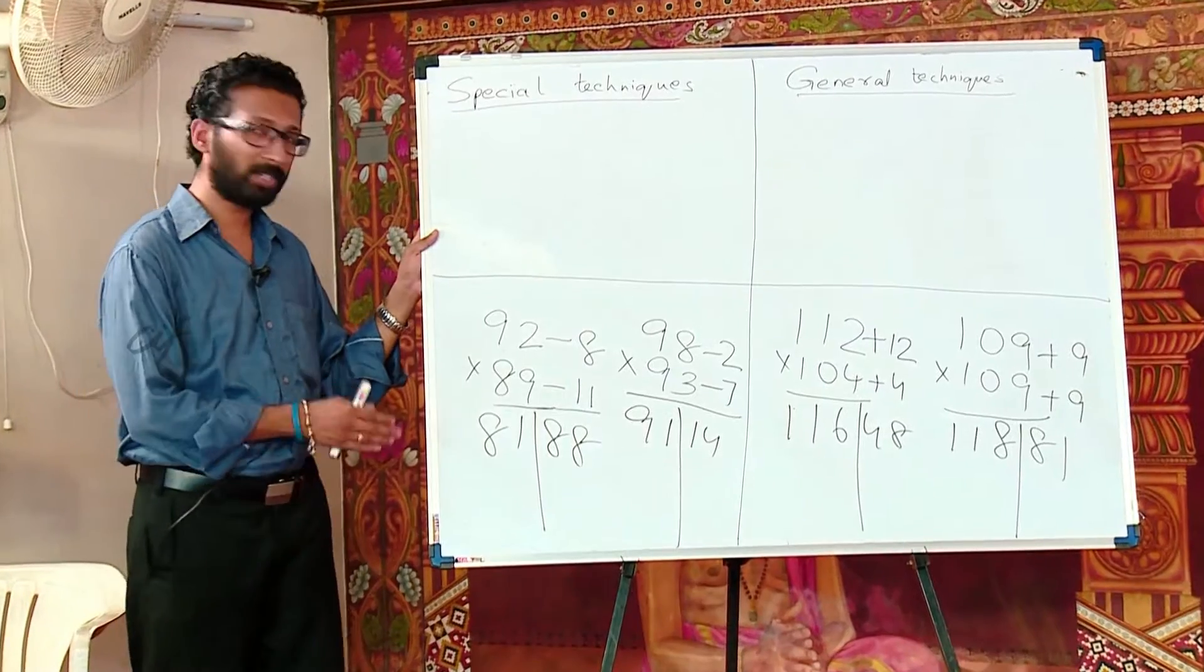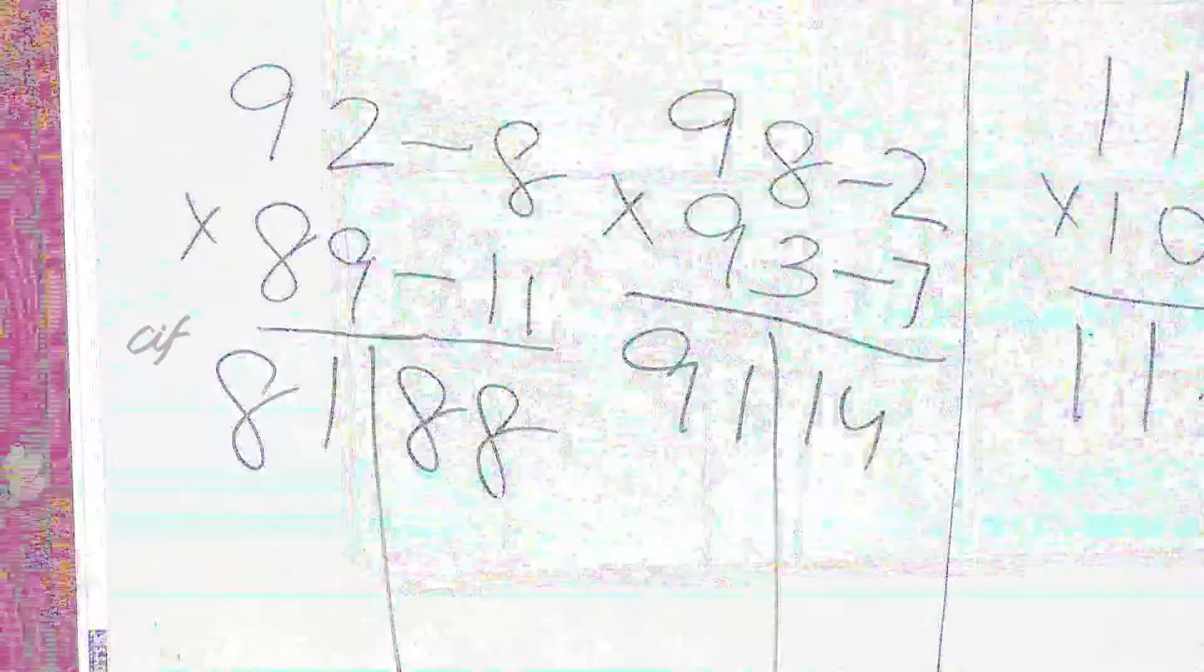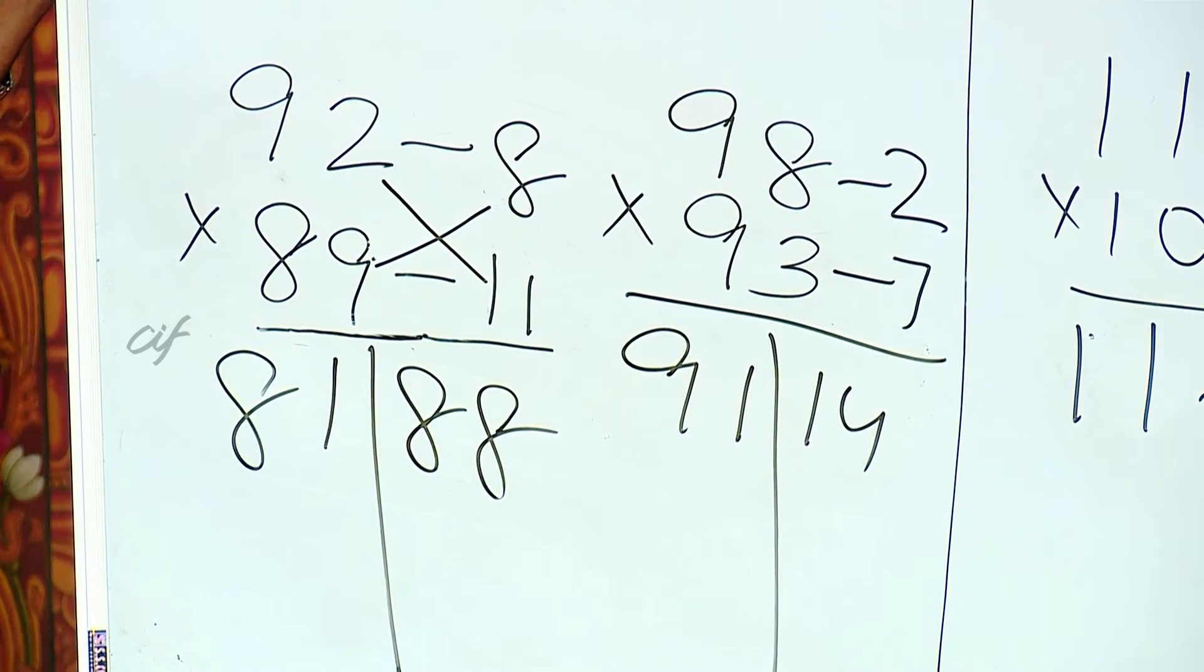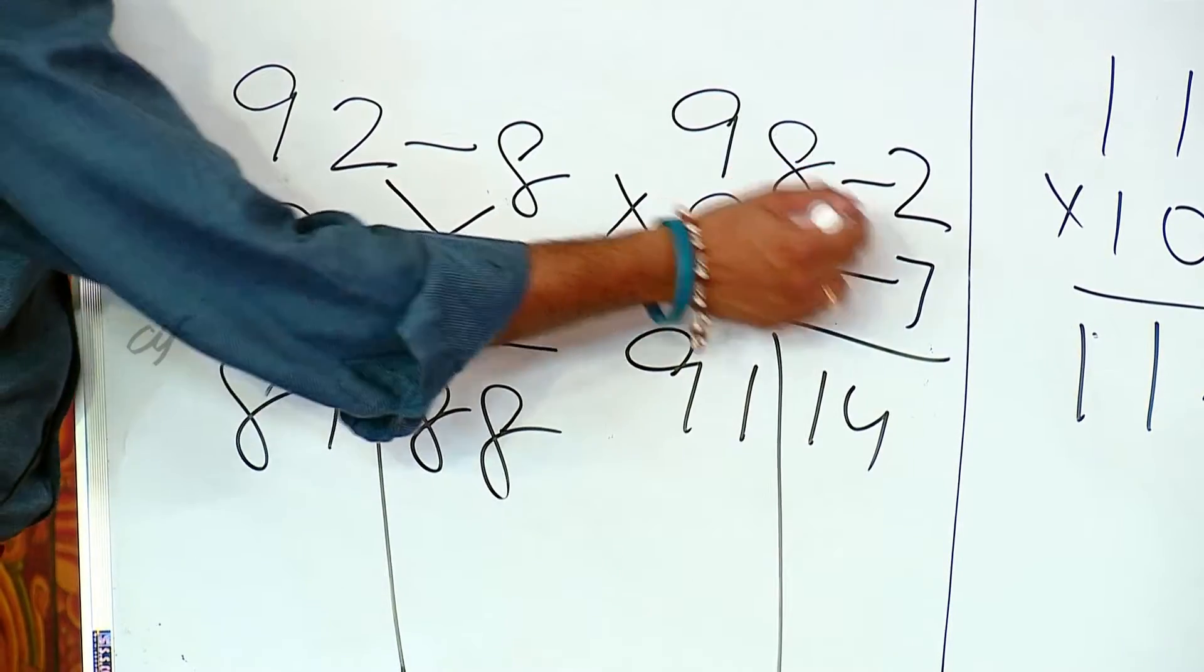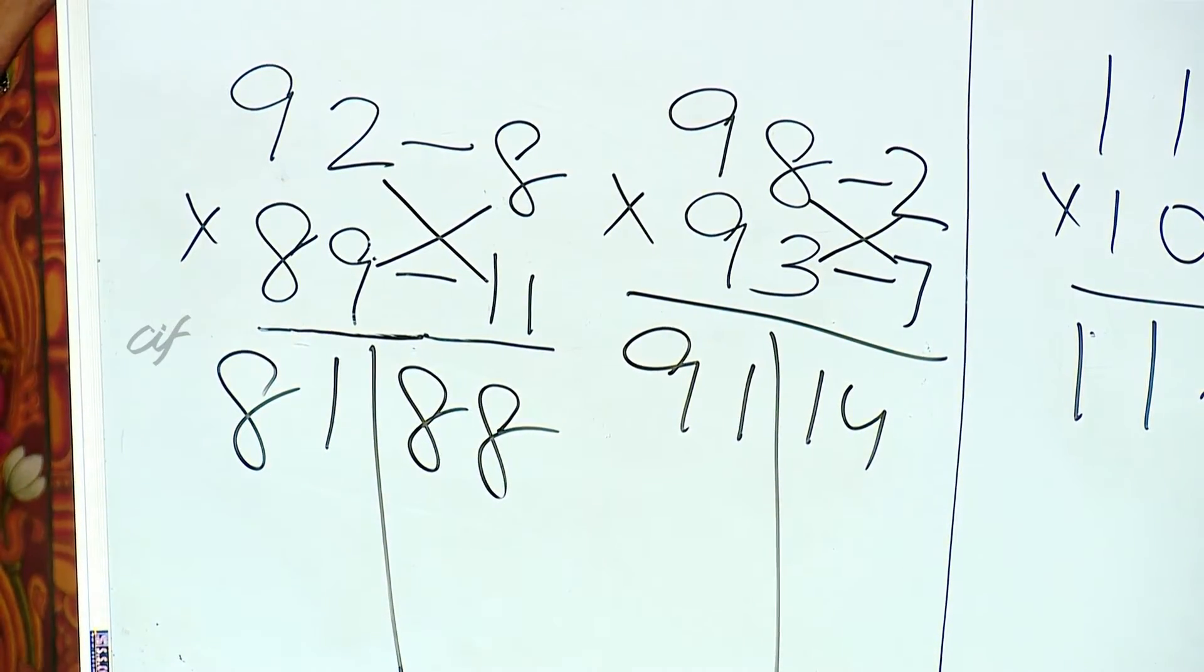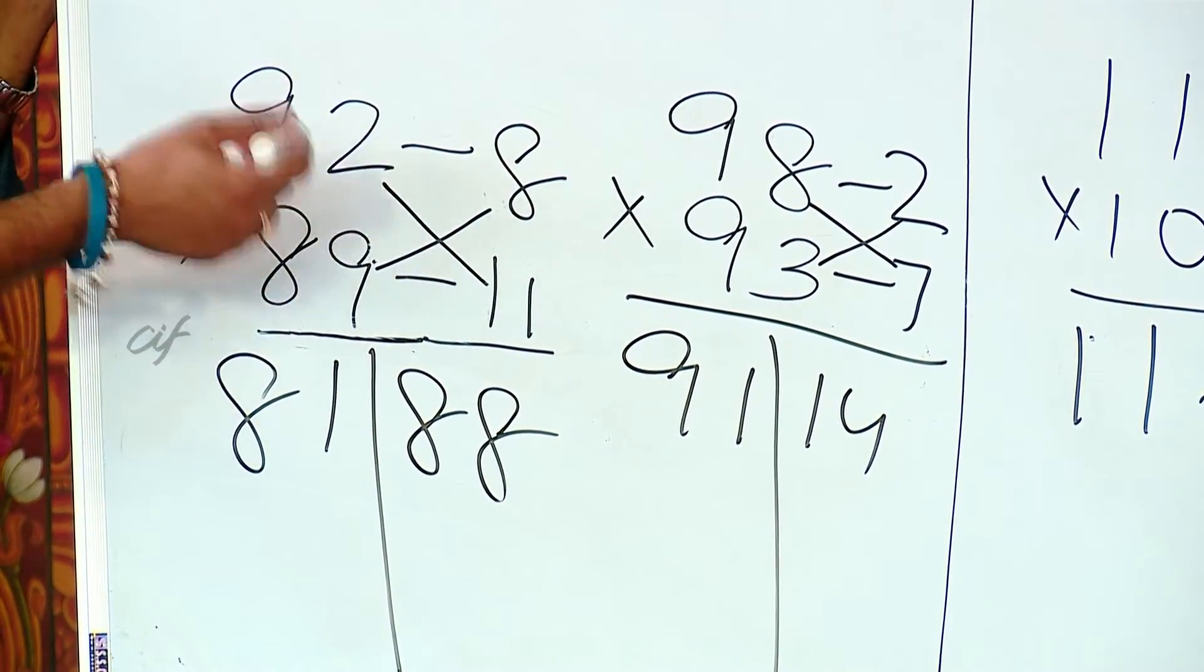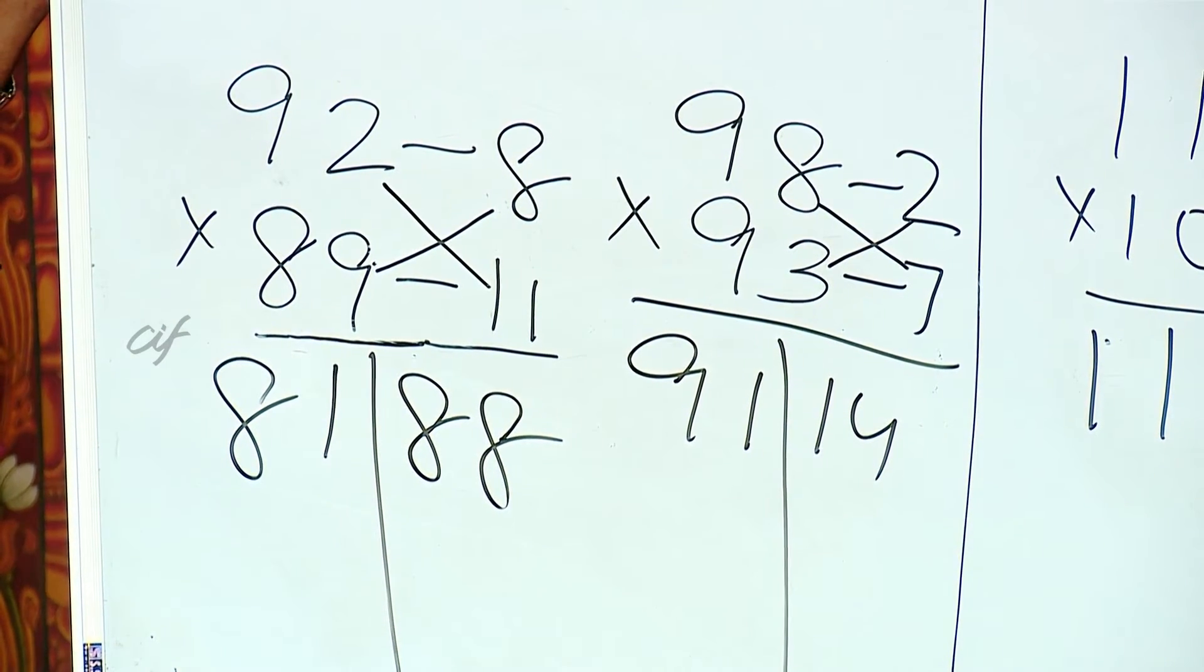As you can see, in the first case, I got this 88 by multiplying 11 times 8 and here I did 89 minus 8 or 92 minus 11. So I get 81. The same thing goes here. 2 times 7 is 14. 98 minus 7 or 93 minus 2. Same over there and over there. So now you can see using this technique, anybody would be able to do all these calculations really fast. So this is another technique in Vedic mathematics.